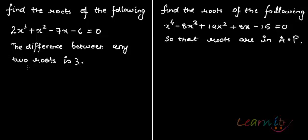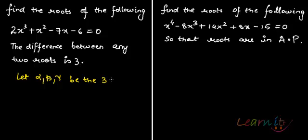We have a cubic equation, and we know that two of the roots have a difference of 3. So let alpha, beta, gamma be the three roots. What we are given is that alpha minus beta equals 3, or we can say that alpha equals beta plus 3.